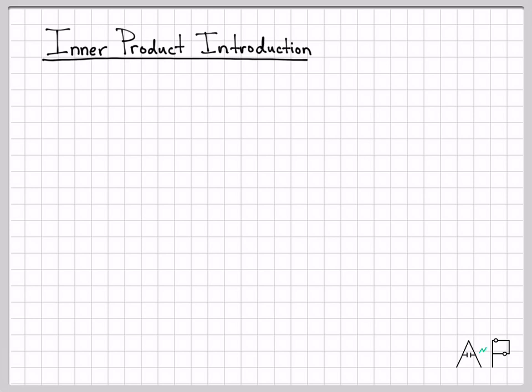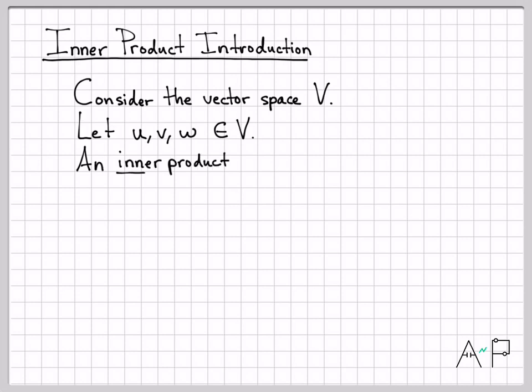We're going to talk about the inner product and an inner product space. So what do we mean by that? Let's take a vector space V. We've worked with vector spaces before in many videos. Out of that vector space V, I'm going to select a handful of arbitrary elements u, v, and w.